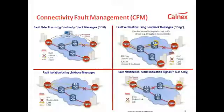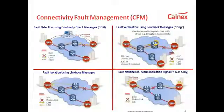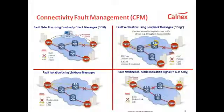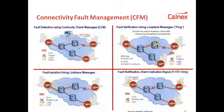Let's take the first type of message in OAM: the continuity check message. This is the basic OAM message type. Continuity check messages, or CCMs, are sent in the network. A transmitting node sends them and the receiving node at the other end receives these messages. If these messages stop arriving, the node knows there is a problem and reports an alarm.